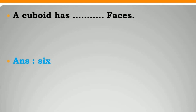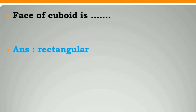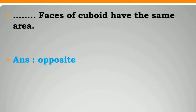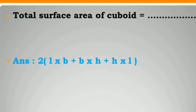A cuboid has 6 faces. Each face of a cuboid is rectangular. Opposite faces of a cuboid have the same area. Total surface area of cuboid is equal to 2 into bracket length into breadth plus breadth into height plus height into length, bracket close.